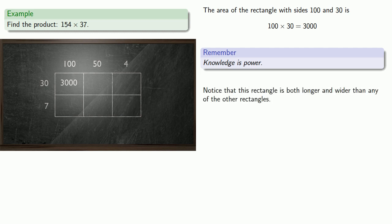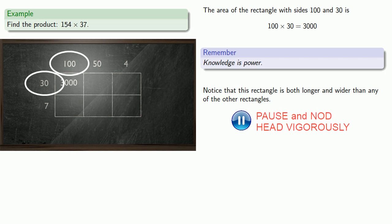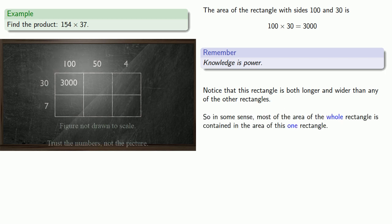So in some sense, most of the area of the whole rectangle is contained in the area of this one rectangle. And so this suggests that the area of this one rectangle is approximately equal to our product. And so this suggests the approximation 154 times 37 is about equal to 3,000.